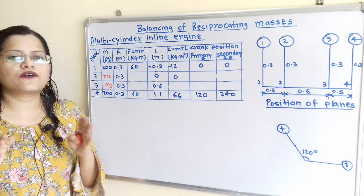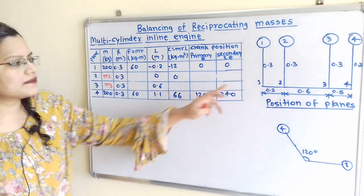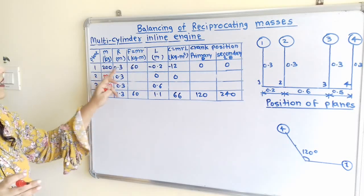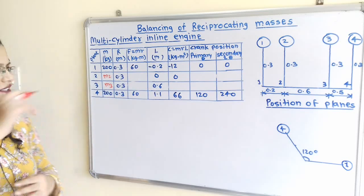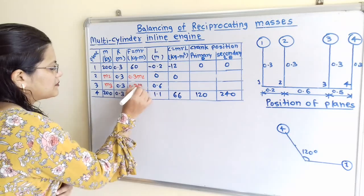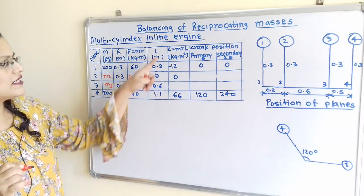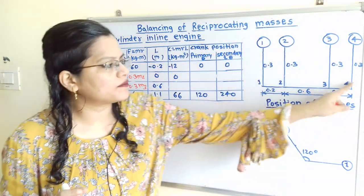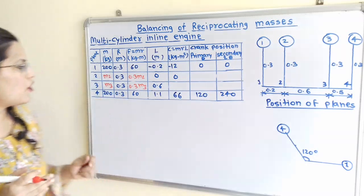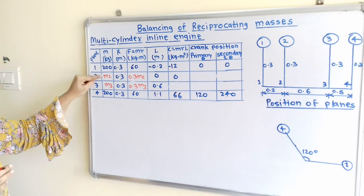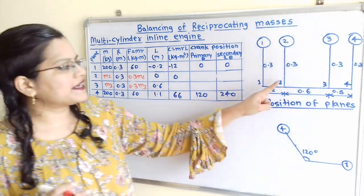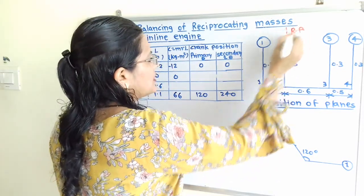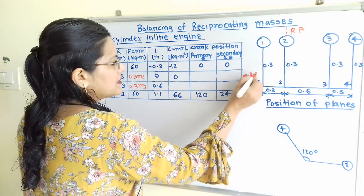The centrifugal force column is calculated as F equal to m·r. For planes 1 and 4, this gives 200 × 0.3 = 60. For planes 2 and 3, the values are 0.3·m2 and 0.3·m3 respectively. We select plane 2 as the reference plane. Distances from the reference plane: plane 1 is −0.2 m, plane 2 is 0, plane 3 is +0.6 m, and plane 4 is 0.6 + 0.5 = 1.1 m.